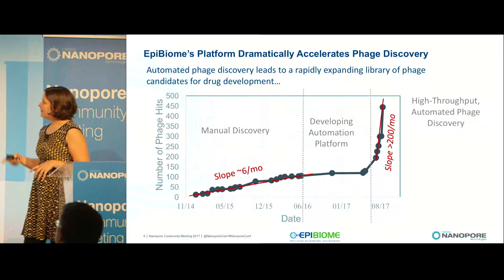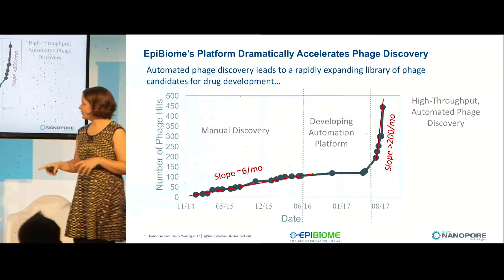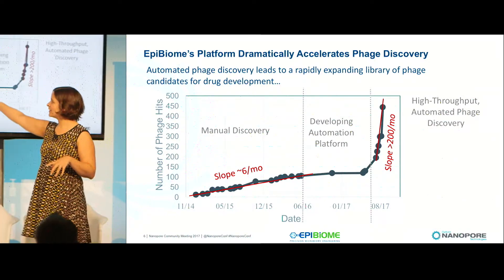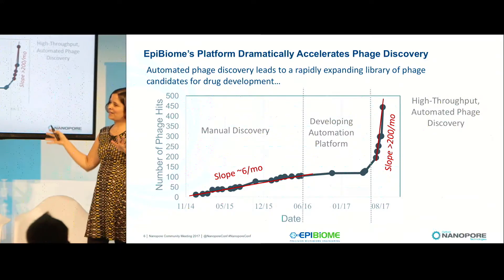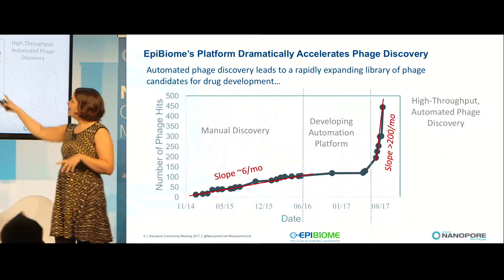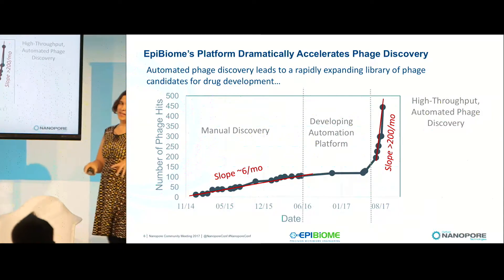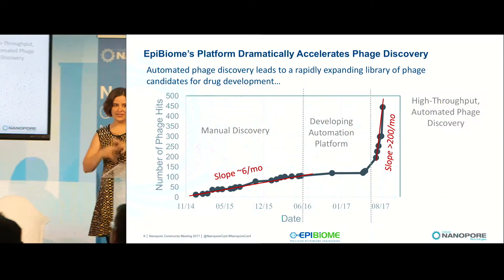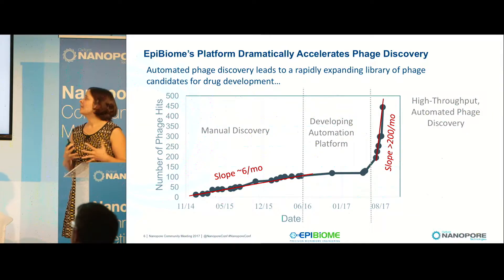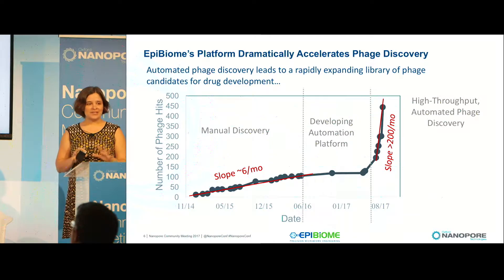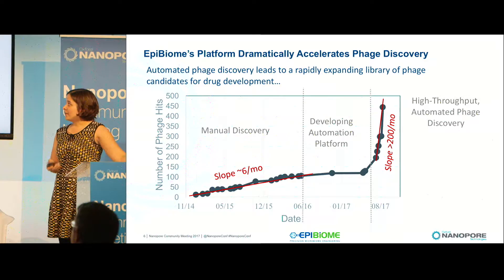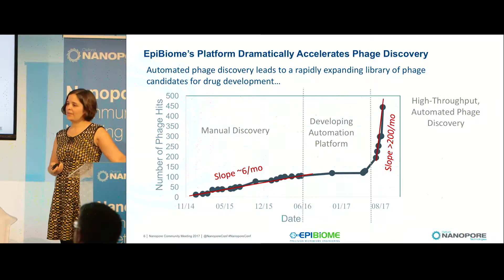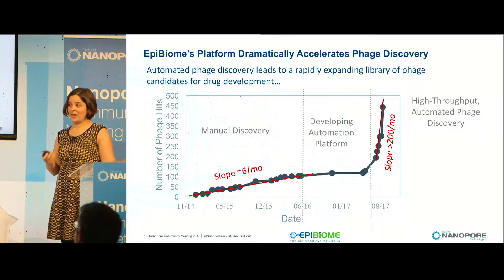Here are some early results from our company. We did manual discovery for a while, then stopped to develop this automation platform. You can see that immediately upon turning it on, we just started generating lots and lots of hits. This is even without full optimization, so we think this will get even faster with time. Now that we have all these phages, let's figure out what they're actually doing.